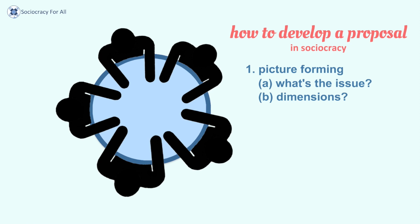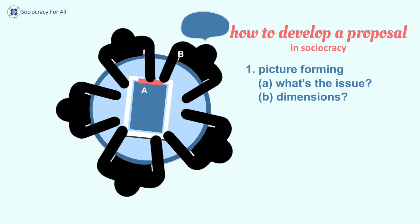The next step is to gather all the dimensions. What do we have to consider so we can make good and concise policy? It's like writing your own checklist. What questions do we have to ask ourselves? The facilitator asks what are the dimensions and everybody in the round says what their ideas are about elements or dimensions, and we write them down so everybody can see them.